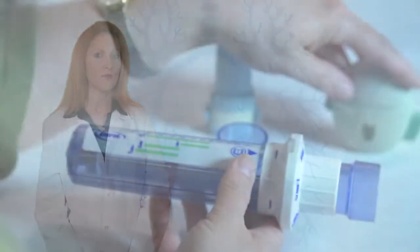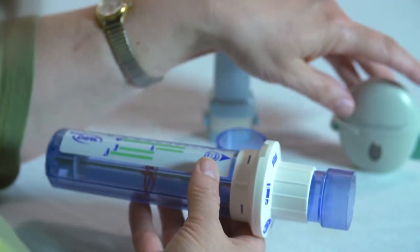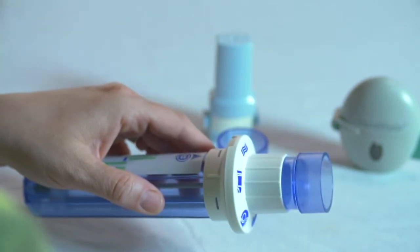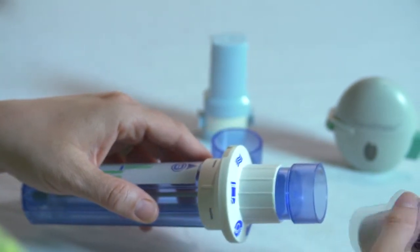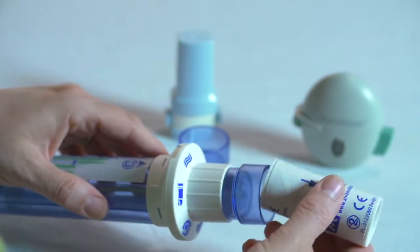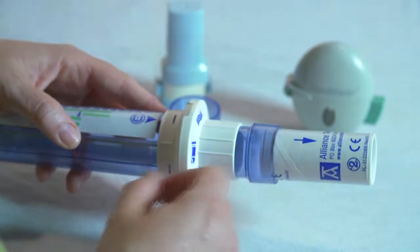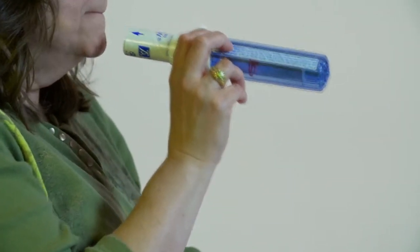To use the InCheck Dial with the Aerolizer, Twisthaler, or Handihaler, align the arrow on the mouthpiece with the free flow or wavy lines. Then insert the appropriate adapter. Insert the disposable mouthpiece into the adapter with the arrow pointing outwards. Then use the same technique as described earlier.